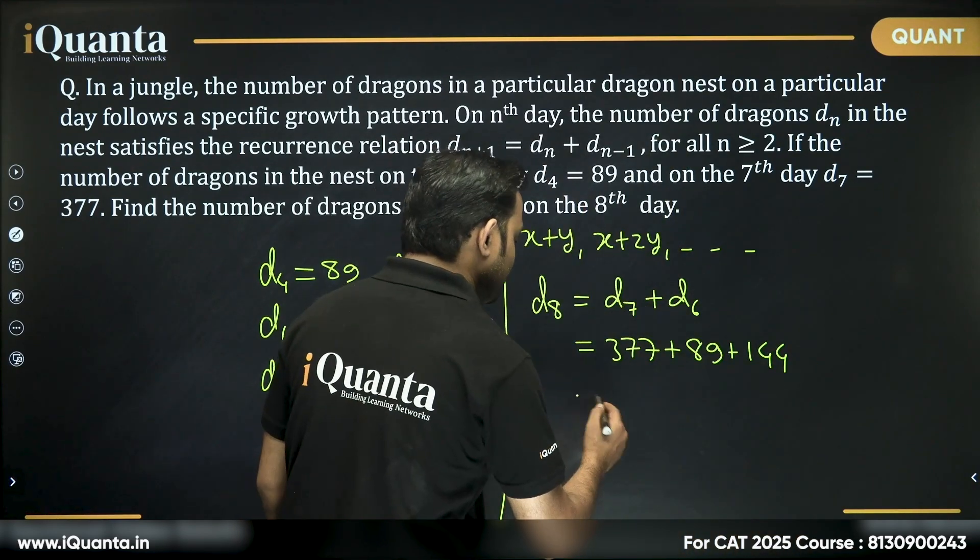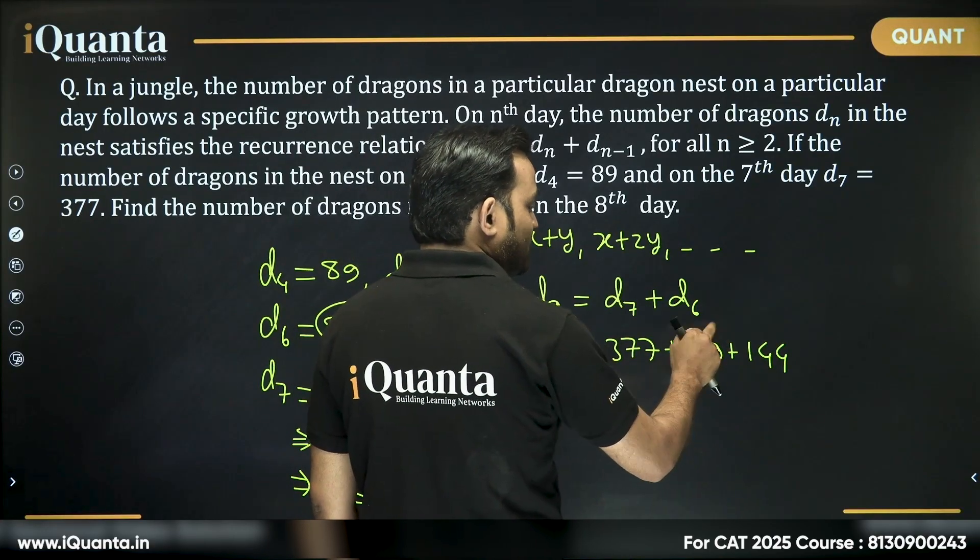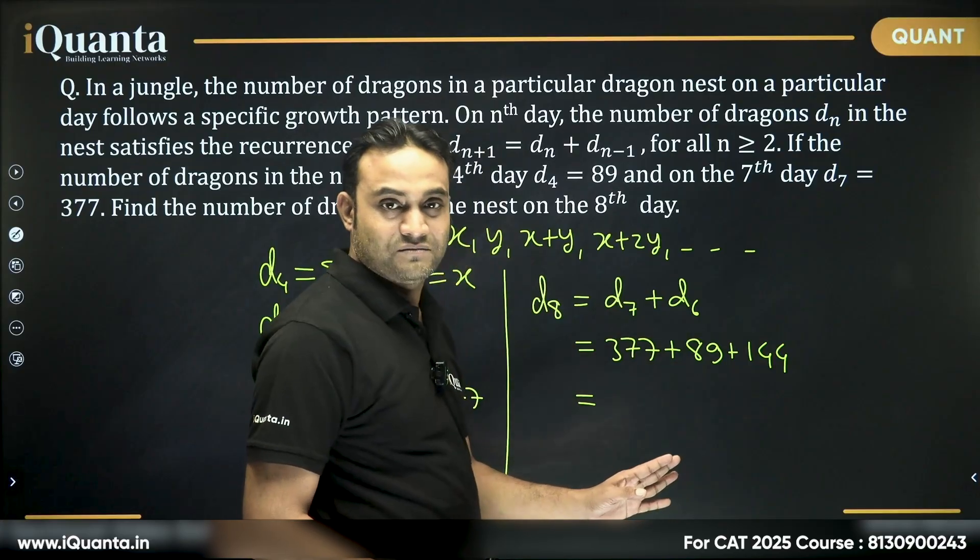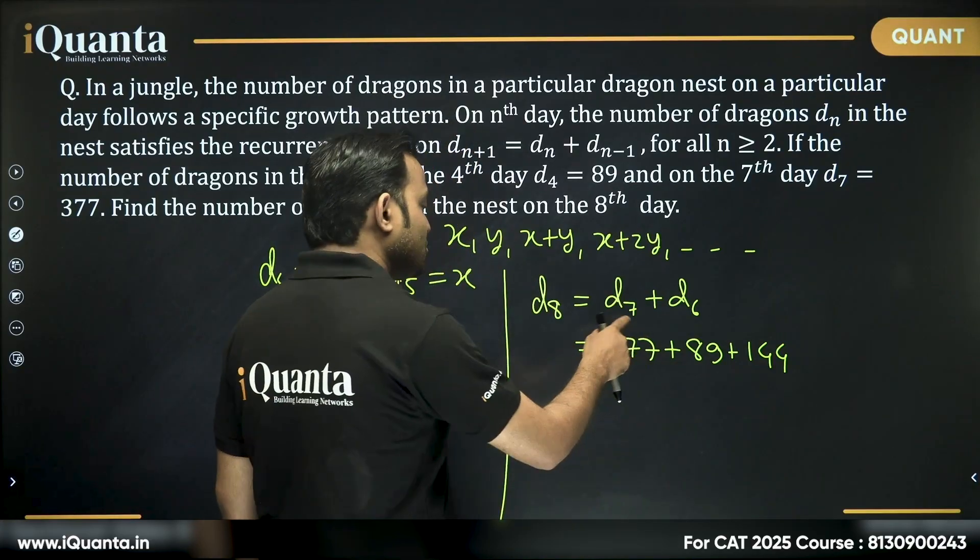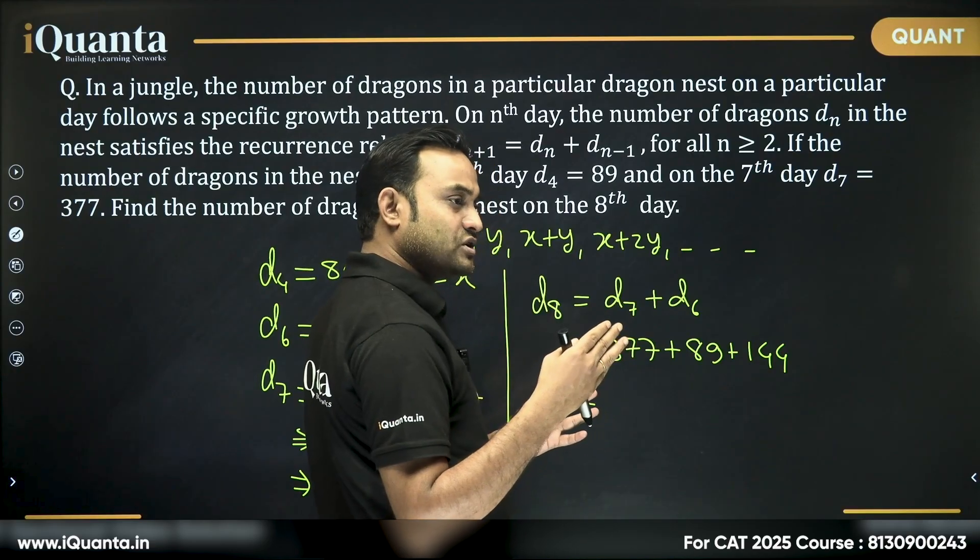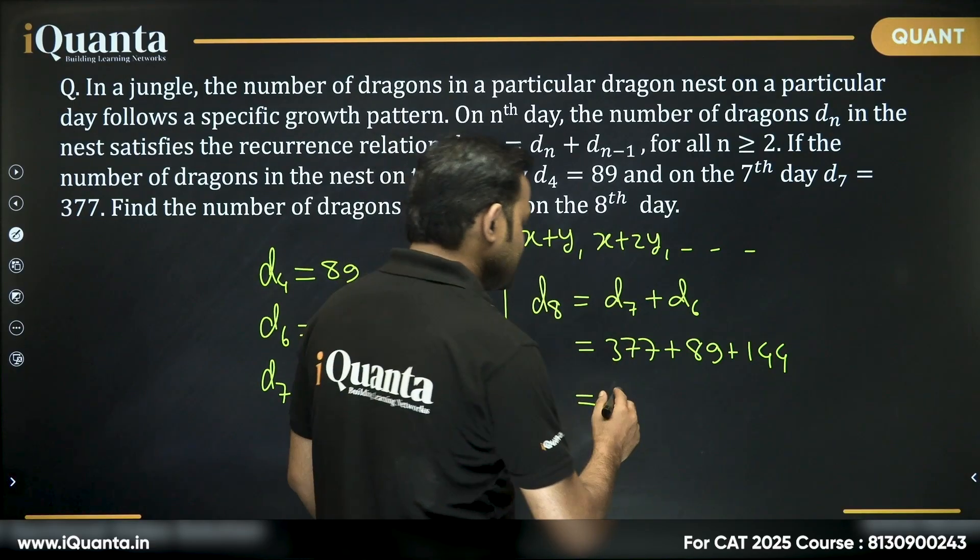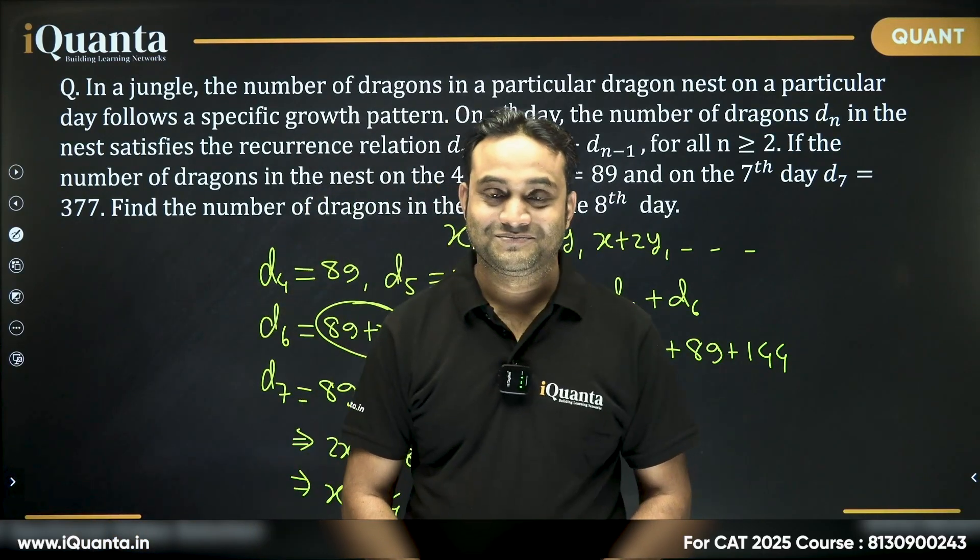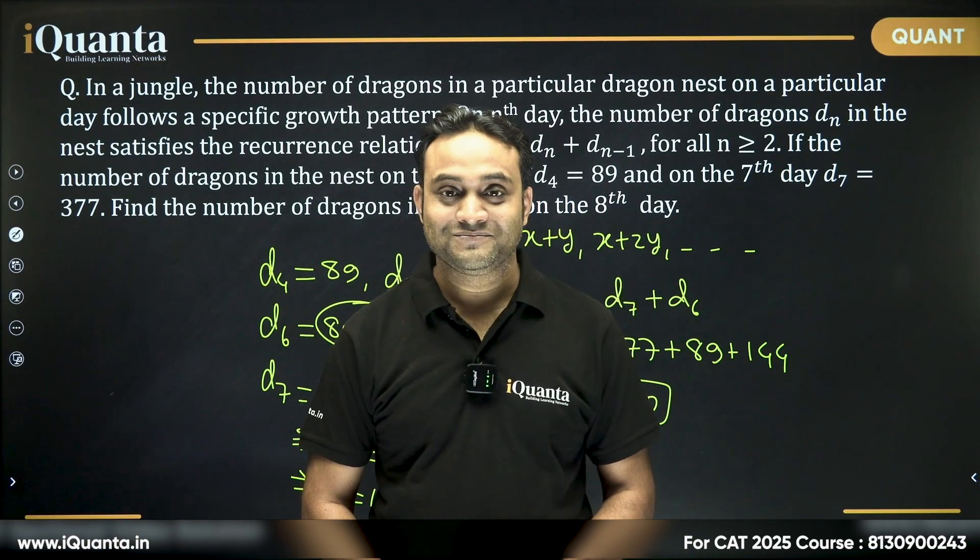What is this value? So, 144... we can take here 100 plus 133, 233, 233 plus 77, 110. So, it will be total 610. And that is our answer. So, I hope you enjoyed this question. Thank you.